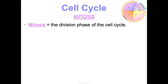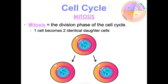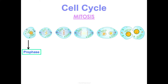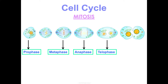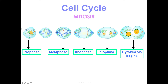Mitosis is the division phase of the cell cycle — where one parent cell becomes two identical daughter cells. The general phases are PMAT: prophase, metaphase, anaphase, telophase, and then it ends with cytokinesis. Some people refer to an intermediate step as prometaphase, but in this class we're just going to learn PMAT. The individual names of the phases don't really matter as much as the overall process, because remember, this is a continuous cycle — these aren't individual discrete events.